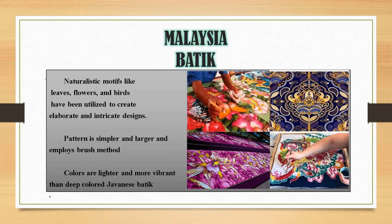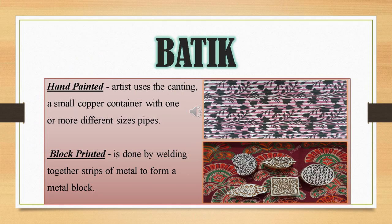Let us now take a look at the fabric design of Malaysia. Naturalistic motifs like leaves, flowers, and birds have been utilized to create elaborate and intricate designs. The pattern is simpler and larger, and it employs the brush method. Colors are lighter and more vibrant than deep-colored Japanese batik. Two types of Malaysian batik: first, hand painted, where the artist uses a decanting tool — a small copper container with one or more different size pipes. Next, block printed, which is done by welding together strips of metal to form a metal block.